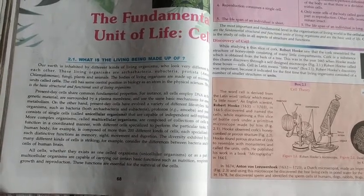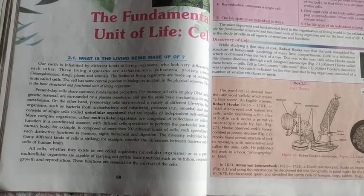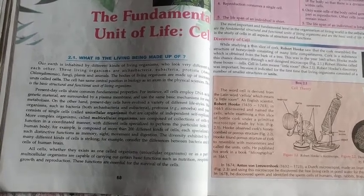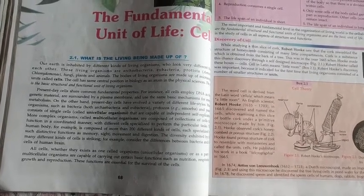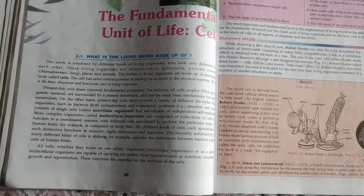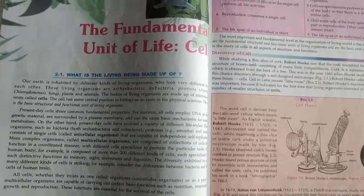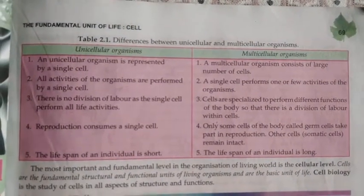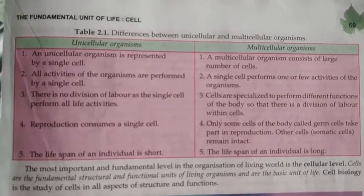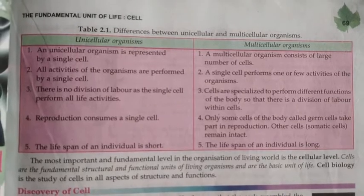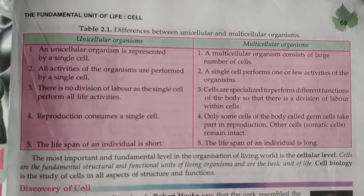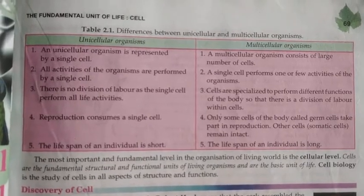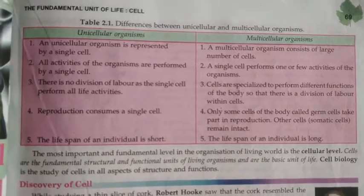This is a wonderful planet where we can see the variety of colorful and differently categorized organisms. Now let's look at the differences between unicellular and multicellular organisms. Unicellular organisms are represented by a single cell, while multicellular organisms contain a large number of cells.